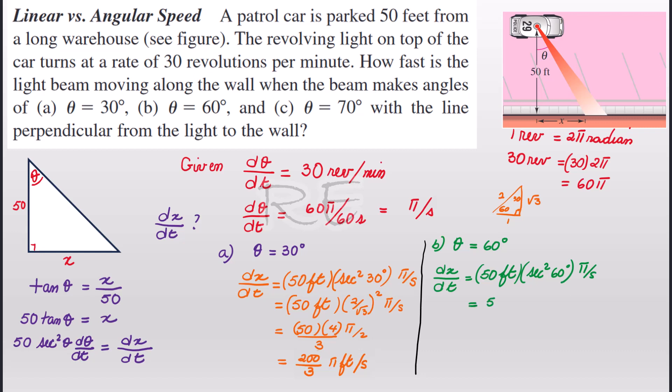Now secant 60 will be 2 over 1. 60 is a special angle. Hypotenuse 2 over adjacent, which is 1 squared times π radians per second. 50 times π radians per second. It's going to be 50 times 4, which is 200π feet per second.